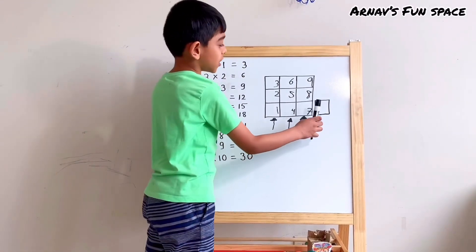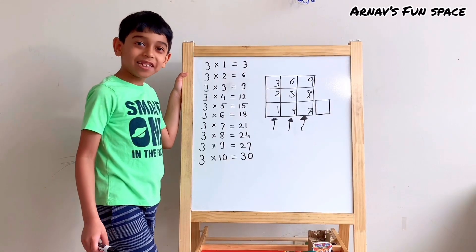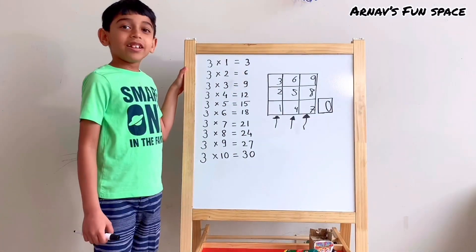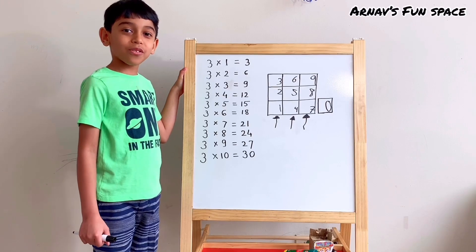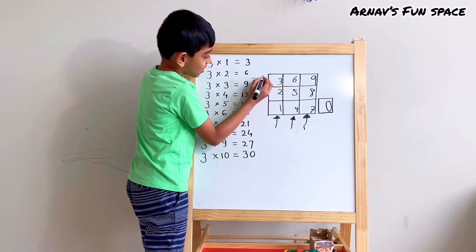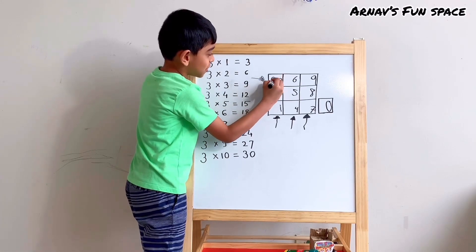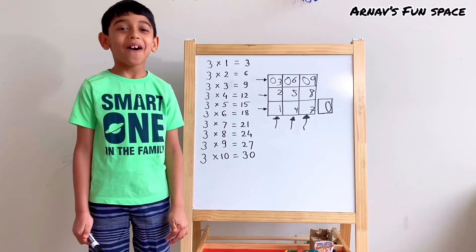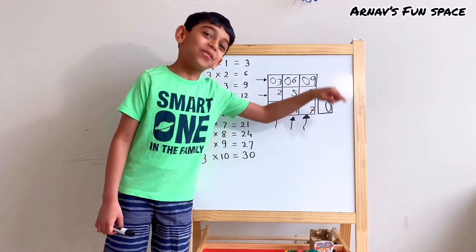And now, in this box, I'm going to write 0 as 10. Now I'm going to write 0 in each box in the first row. 0, 0, 0. Now, in the second row, write 1, 1, 1.